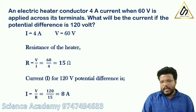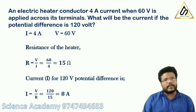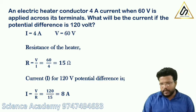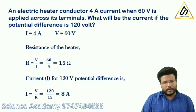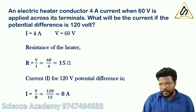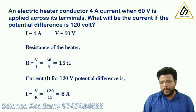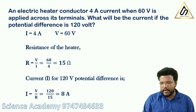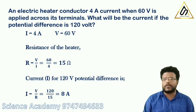An electric heater conductor draws 4A current when 60V is applied across its terminals. What will be the current if the potential difference is changed to 120V?